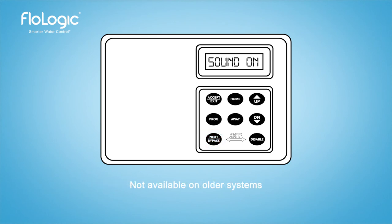The sound on mode indicates the control panel will make audible beeps, such as when an auto shutoff has occurred or when the auto away mode is activated.